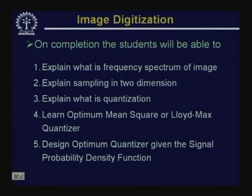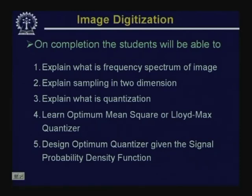In today's lecture, we will see the frequency spectrum of an image and explain how to sample the image in 2 dimensions. Then we will go to the second stage of the digitization process. Image digitization consists of 2 phases: in the first phase we go for sampling, and in the second phase we go for quantization of each sample. We will also talk about the optimum mean square error Lloyd-Max quantizer and how to design an optimum quantizer given the signal's probability density function.